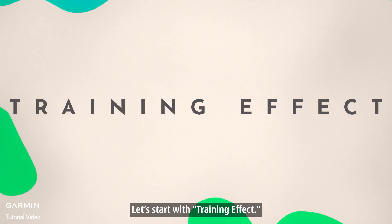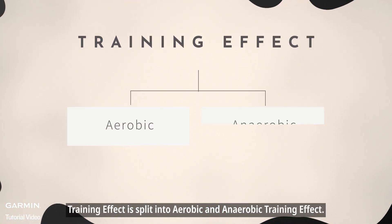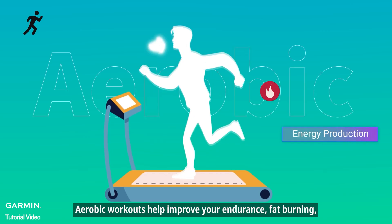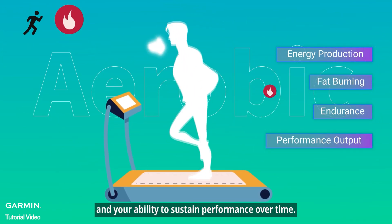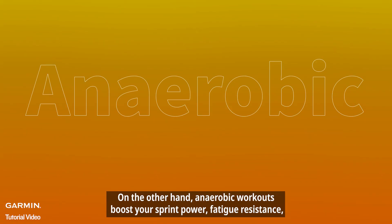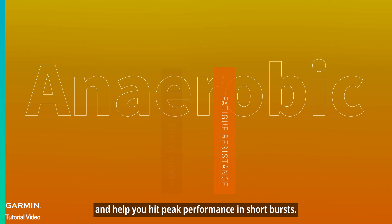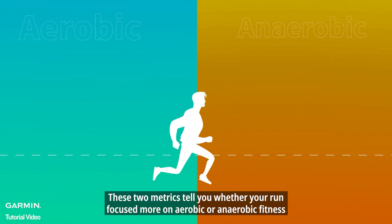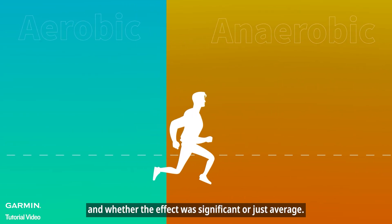Let's start with training effect. Training effect is split into aerobic and anaerobic training effect. Aerobic workouts help improve your endurance, fat burning, and your ability to sustain performance over time. On the other hand, anaerobic workouts boost your sprint power, fatigue resistance, and help you hit peak performance in short bursts. These two metrics tell you whether your run focused more on aerobic or anaerobic fitness, and whether the effect was significant or just average.